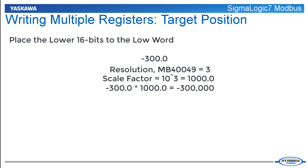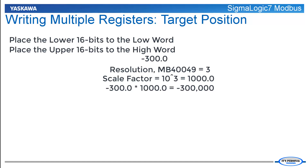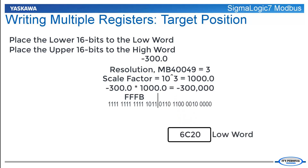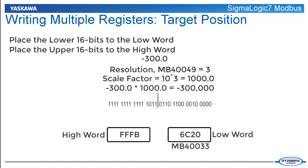Next, place the lower 16 bits into the low word and the upper 16 bits into the high word. It is easier to understand where the bits and bytes are located by expressing this number in binary and hex. The hex equivalent of negative 300,000 is FFFB6C20. So 6C20 will be placed into the low word at register 40033, and FFFB will be placed in the high word at register 40034.